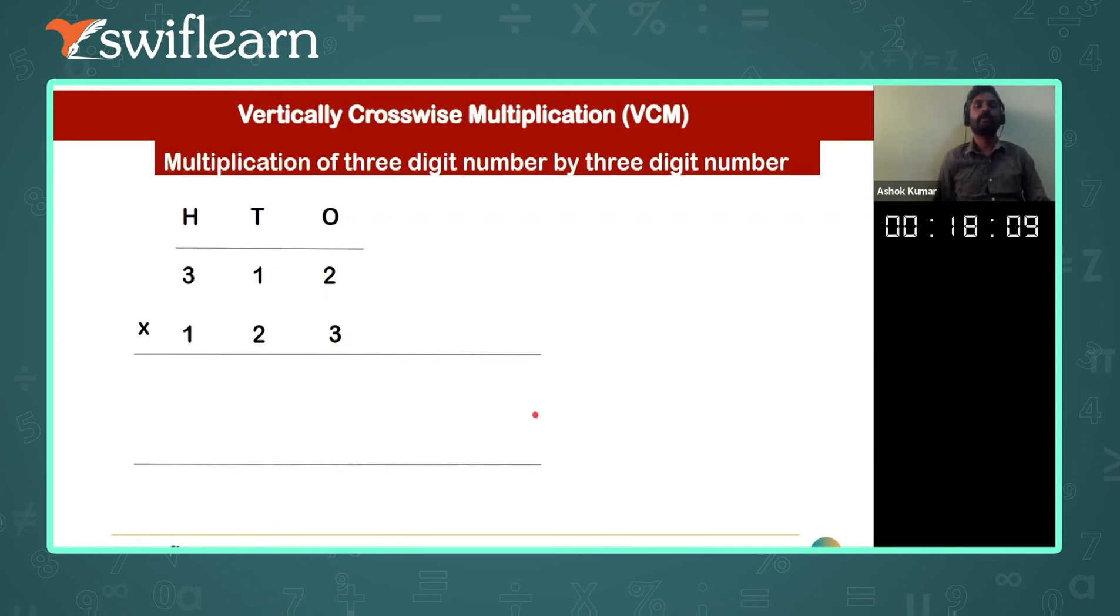Yes, so always remember the carryover part is very important. The first step is already given. The second step you already know - this will be seven. And third step, you can see you are multiplying all the things, so it will be 13.